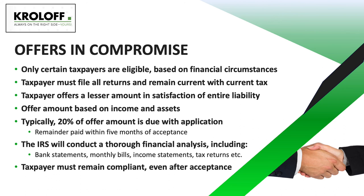In a typical offer situation, 20% of the offer amount is due with the initial application, unless the taxpayer qualifies for low income treatment. In the event the offer is accepted, the taxpayer would need to pay the additional 80% of the offer amount within five months of acceptance. Once full payment of the offer amount has been made, all remaining tax liabilities are zeroed out, but the taxpayer must remain compliant with all filing and payment requirements for the next five years. If they do not, the IRS can and will reinstate the original amounts due plus interest.